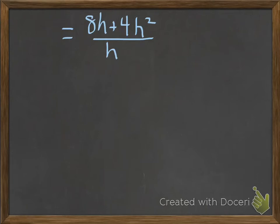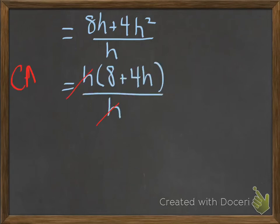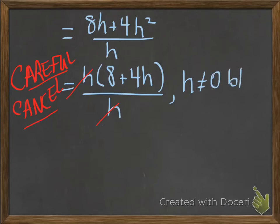What I'm left with is 8h plus 4h² divided by h. So I can factor out an h here, but what I will notice is this is what I call a careful cancel. We have an h on top and an h on the bottom. We can only cancel two numbers if they are not 0. 0 over 0 is not equal to 1. That is what we're using when we cancel something in the numerator and denominator. We're using the fact that a number divided by itself equals 1.